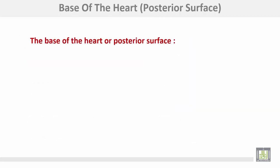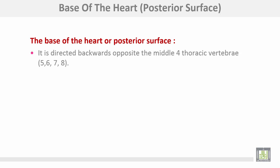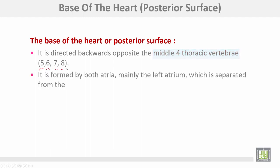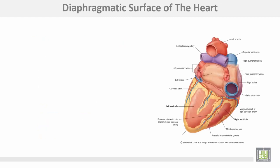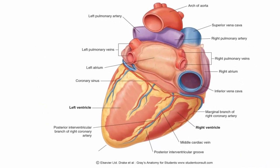The base of the heart, or posterior surface, is directed backwards and upwards opposite the middle four thoracic vertebrae: numbers five, six, seven, and eight. It is formed by both atria, mainly the left atrium, which is separated from the vertebral column by the pericardium, esophagus, and descending aorta.